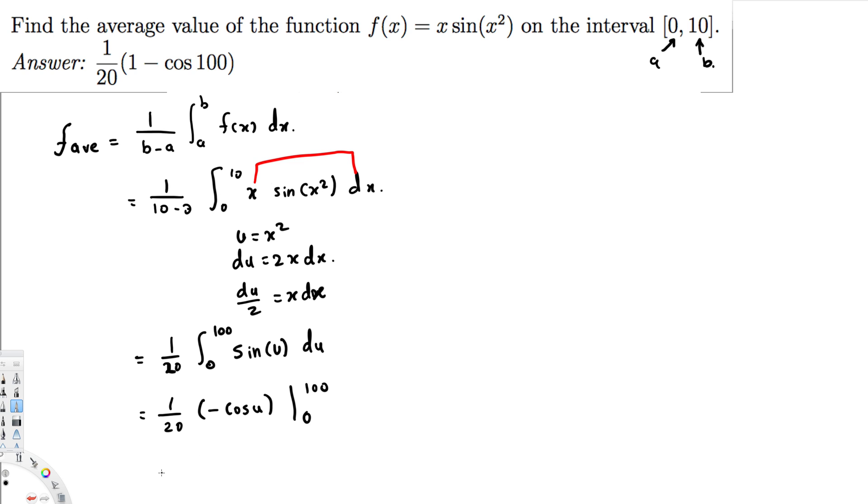And let's substitute the values. So here we are going to have 1 over 20. And if we substitute 100, this is minus cos(100) minus when we substitute 0, cos(0) right here. That's it.